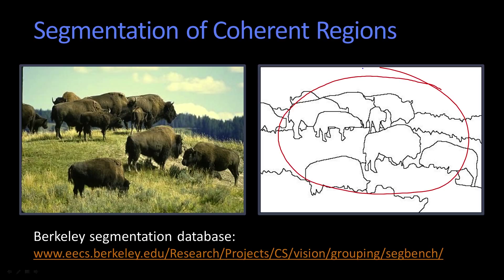People would segment, and the segmentations wouldn't all agree. Some people might separate out this little guy here from the grass, but in general there'd be good agreement on where the different elements are. This database they created recorded a whole bunch of segmentations done by people, and that can be used to train systems.